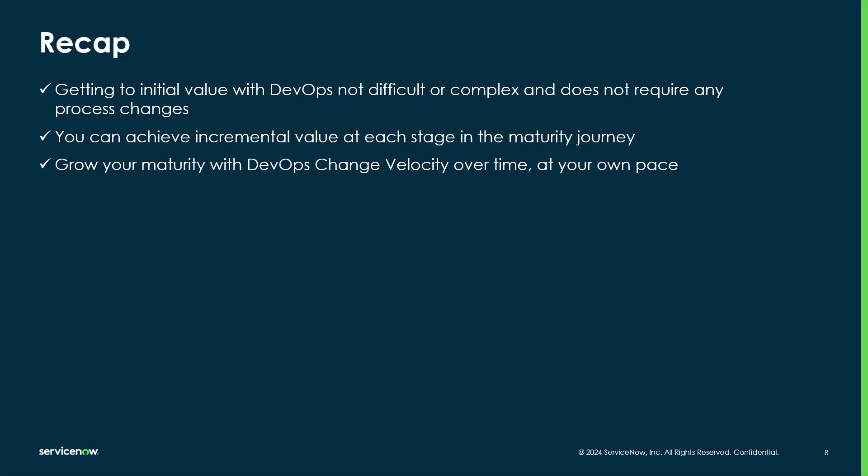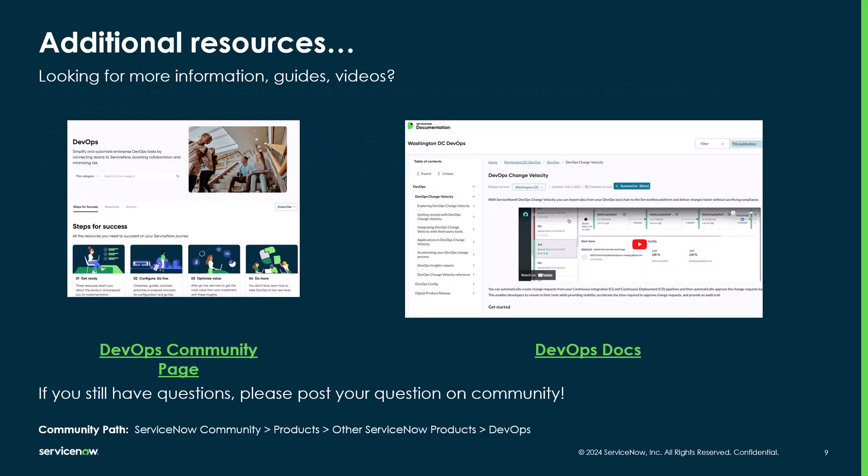And now you've seen how companies like yours can get started with ServiceNow's DevOps Change Velocity. While full change automation is the ultimate goal, you can achieve value at each step in the maturity journey. To get started, all you need to do is activate the DevOps Change Velocity application and start connecting your tools. For additional support, please check out the DevOps community page where we have other helpful videos, blogs, and resources.